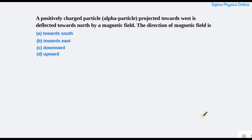Hello students, welcome back. Let's solve the next question. It's a question from magnetic effect of current and it reads: a positively charged alpha particle projected towards west is deflected towards north by a magnetic field.